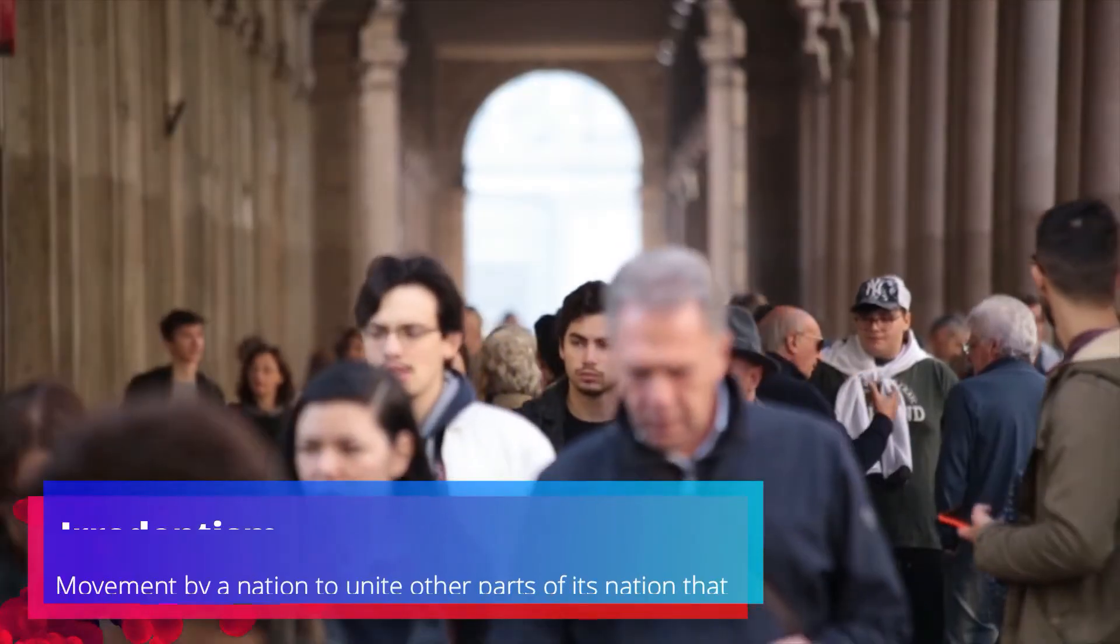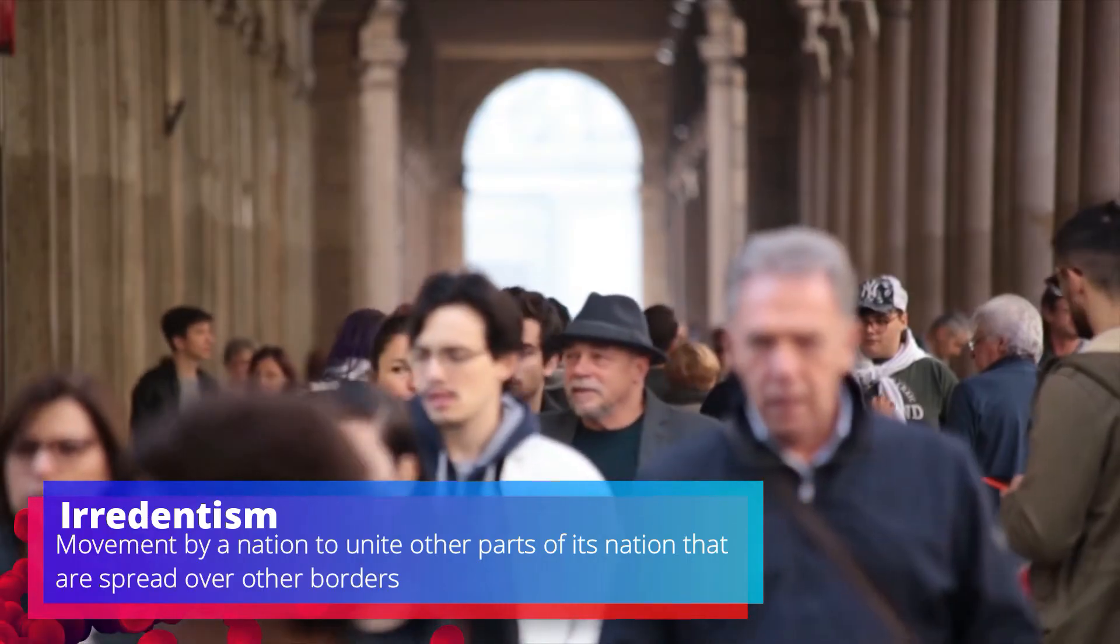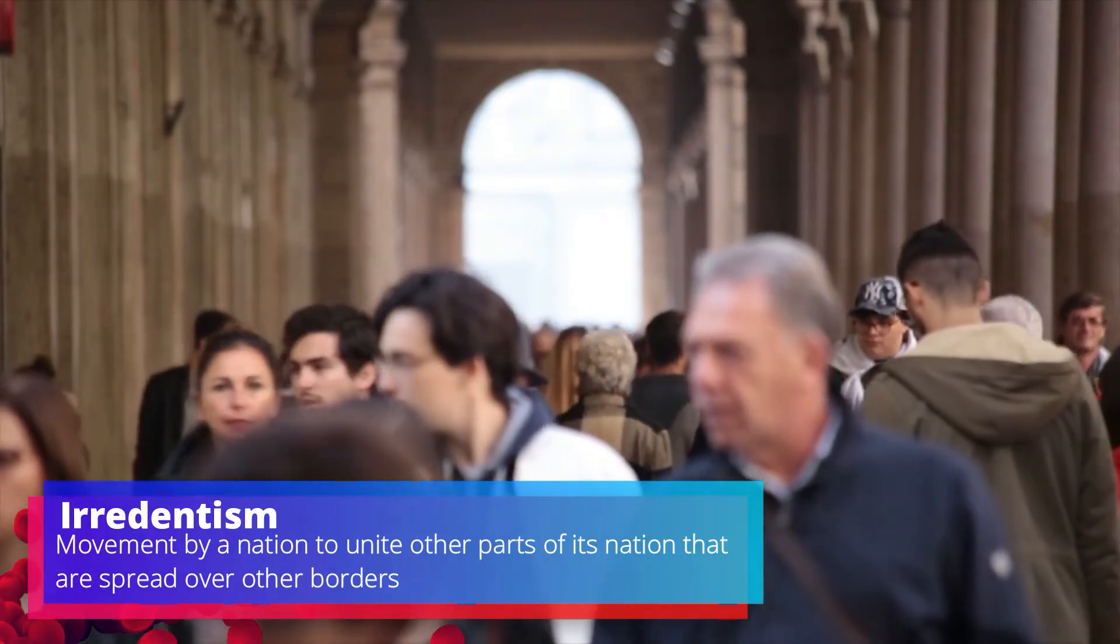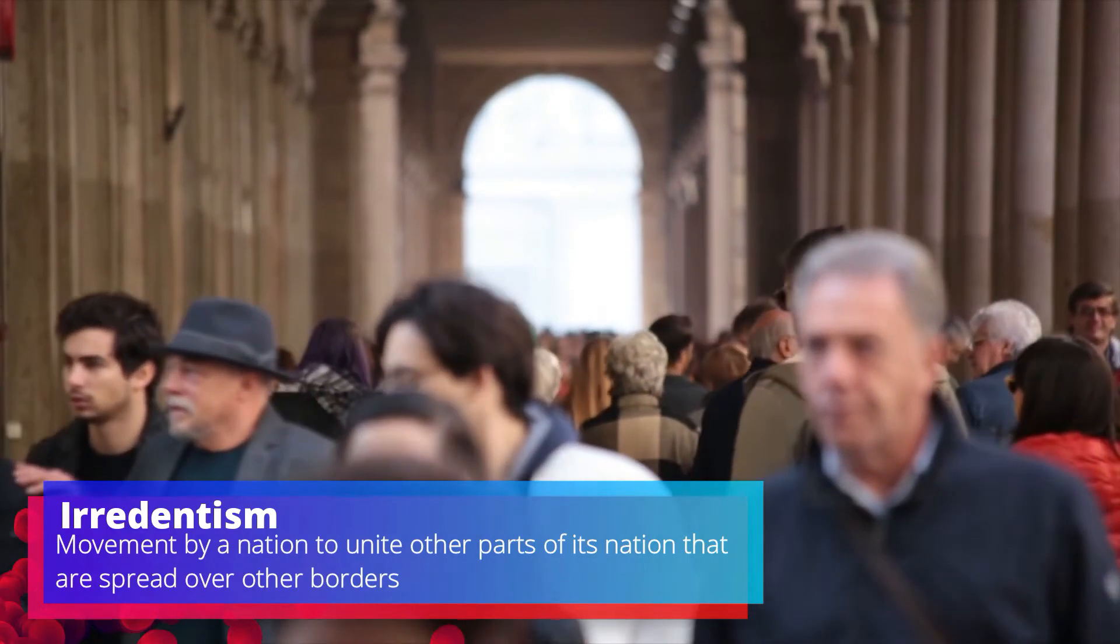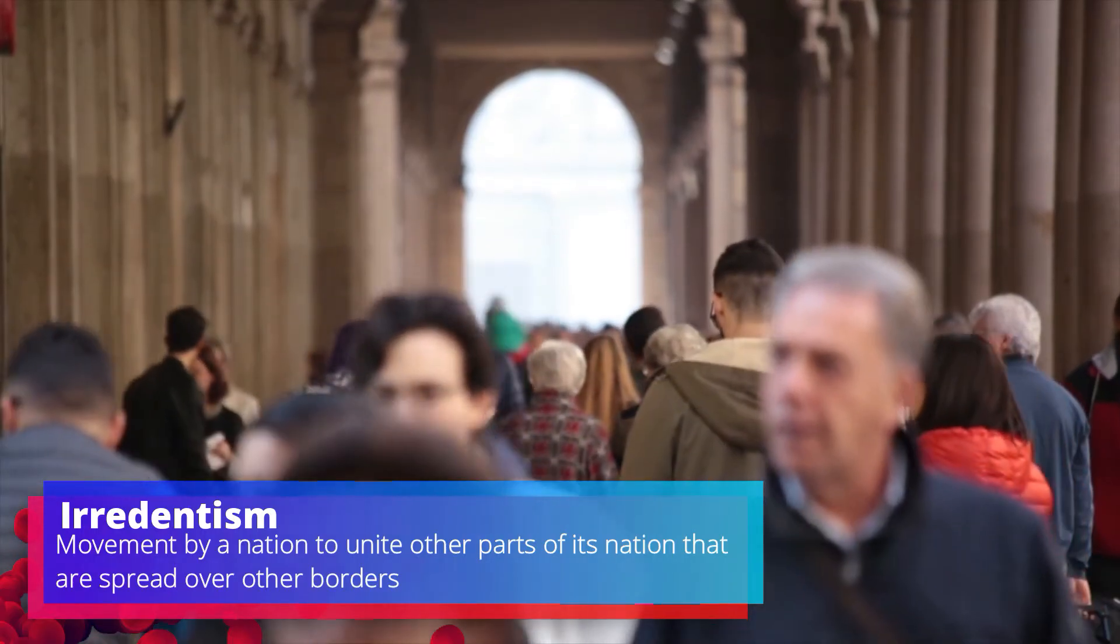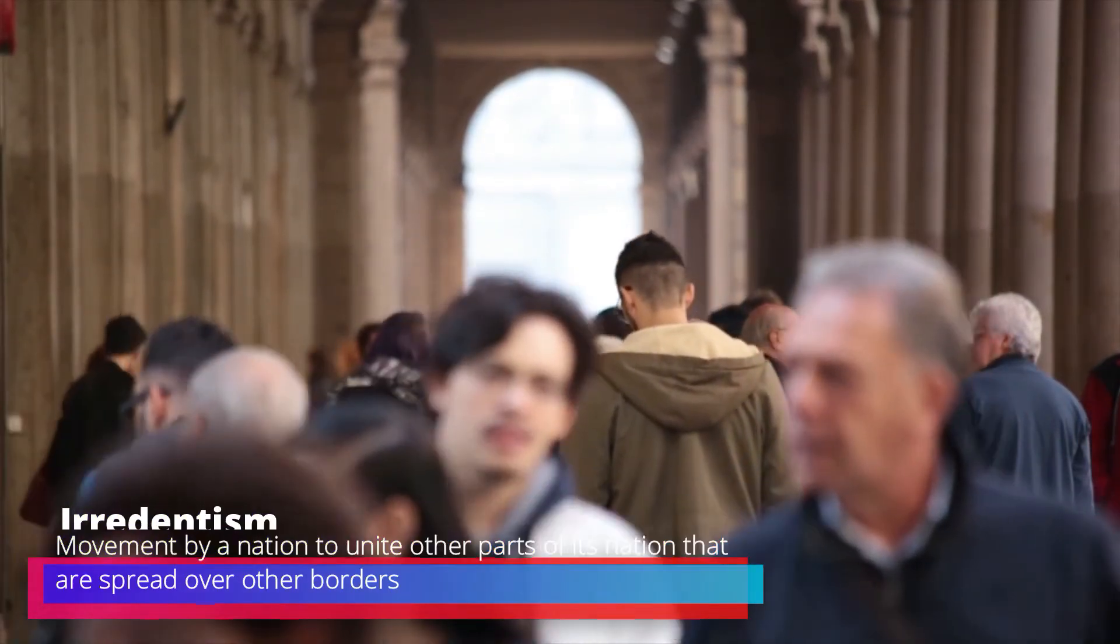The last evolutionary force we could look at is irredentism. Irredentism is the movement by which a nation seeks to unify members of its nation that are spread out over the boundaries of other states. Remember, when we're talking about nations, we're not talking about a state. Here, the nations exist in multiple states. However, they're seeking to be unified under one state, and that's where devolution could occur.